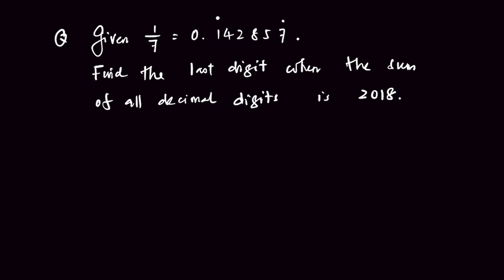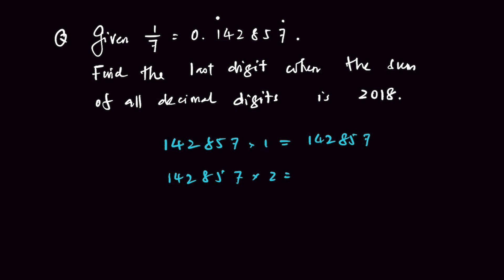This question brings us to the first cyclic number in mathematics, which is 142857. There is an interesting observation about the first cyclic number — you can multiply it by 1, 2, 3, all the way to 7 respectively, and you get the same combination of numbers arranged differently.